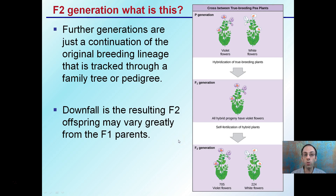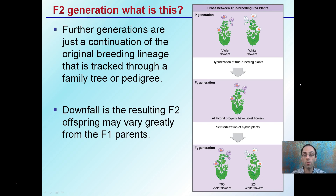Lastly, we may hear about something called the F2 generation. Further generations are just continuations of the original breeding lineage, tracked through a family tree or pedigree. The downfall is that resulting F2 generation offspring may vary greatly from the F1 parents. So if you take seeds from that F1 generation, you could get something that reverts back to one of the originals. If you ever grow hybrid tomatoes and save the seeds, you may get offspring that look nothing like the original, because it's reverting back to one of the original generations.